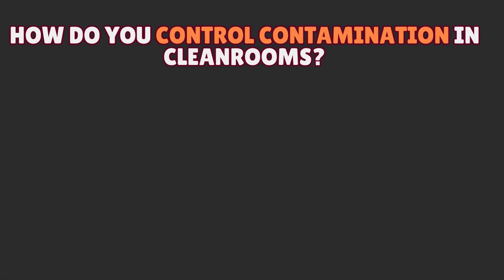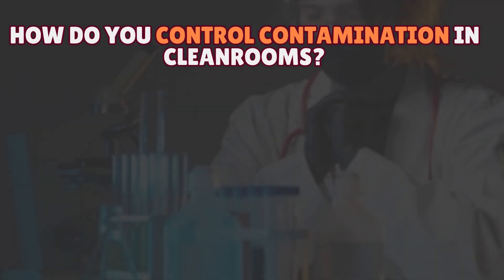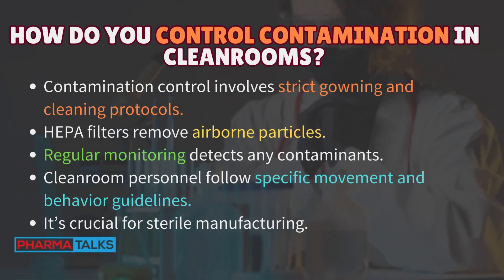How do you control contamination in cleanrooms? Contamination control involves strict gowning and cleaning protocols. HEPA filters remove airborne particles. Regular monitoring detects any contaminants. Cleanroom personnel follow specific movement and behavior guidelines. It's crucial for sterile manufacturing.